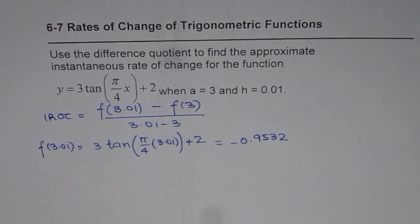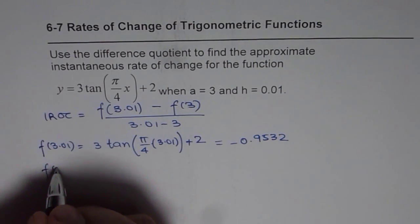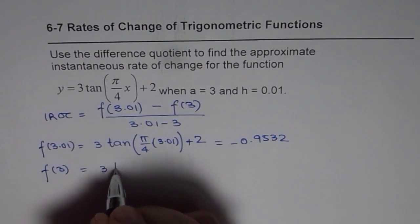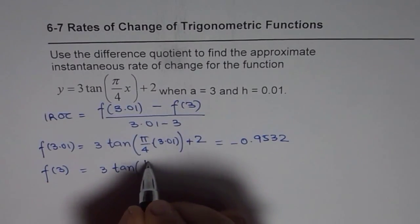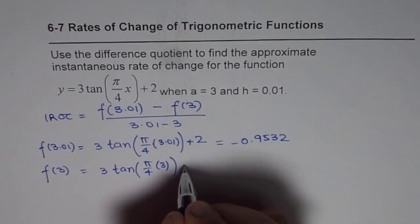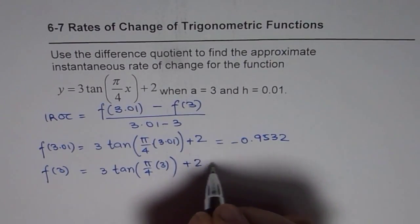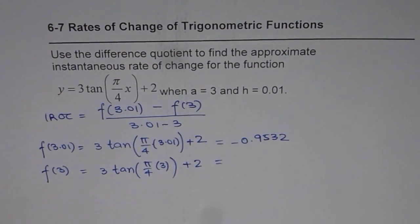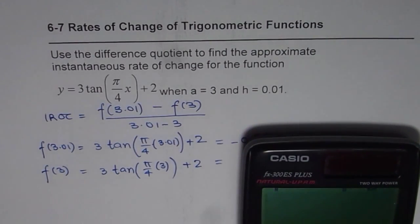Now, let's find the value of function at 3, so when a goes to 3, we get 3 times tan(π/4 times 3) plus 2. Now, it's good practice to find these values independently, since if you do a mistake, you know which one to correct.